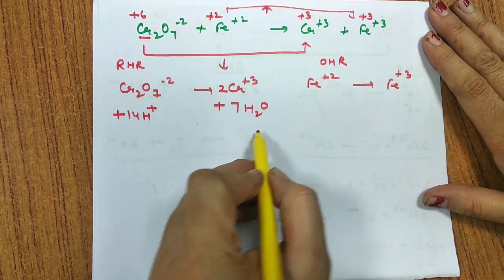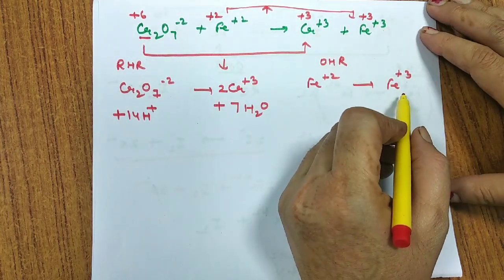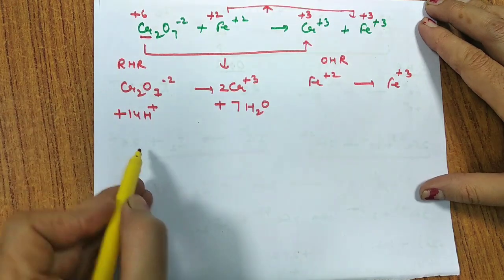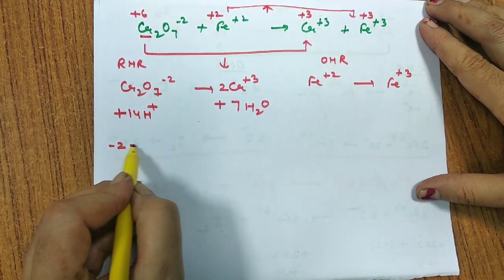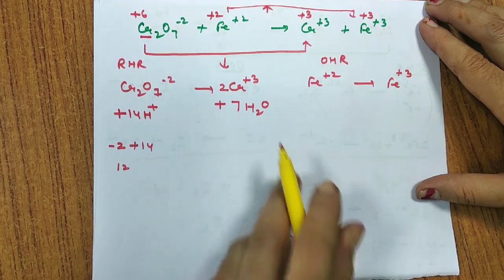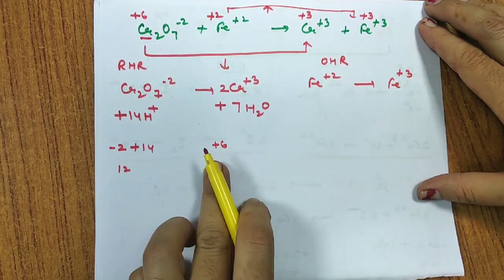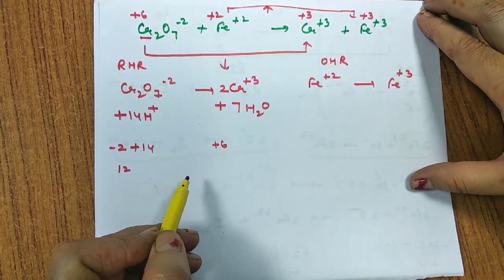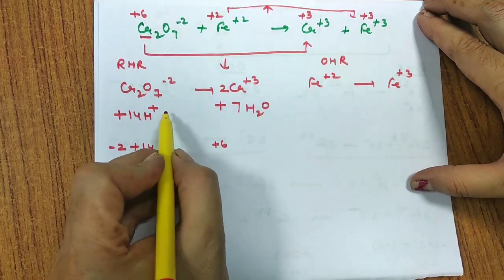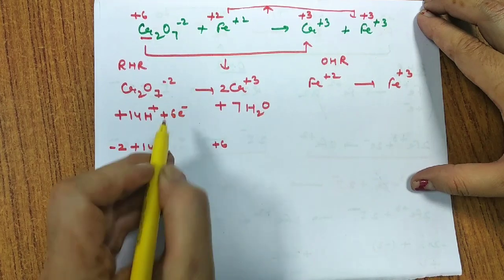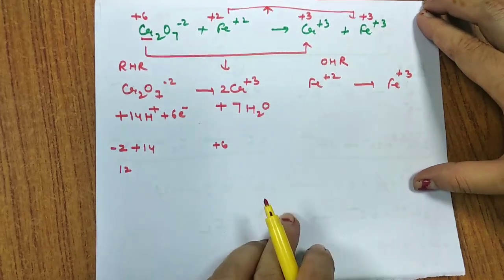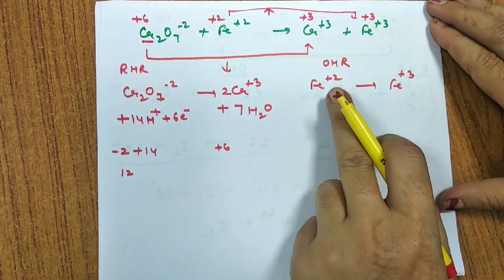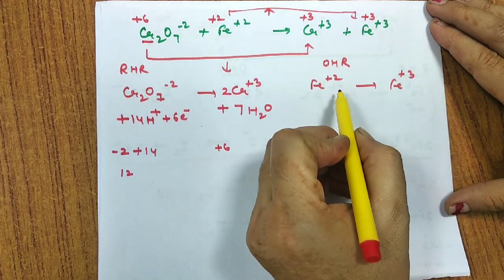Atoms are now balanced. Next, balance the charge. Left side of the reduction half reaction: -2 + 14 = +12. Right side: +6. The difference is 6, so we add 6 electrons to the left side: Cr₂O₇²⁻ + 14H⁺ + 6e⁻ → 2Cr³⁺ + 7H₂O. For the oxidation half reaction Fe²⁺ → Fe³⁺, the charge difference is 1, so we add 1 electron to the right side.